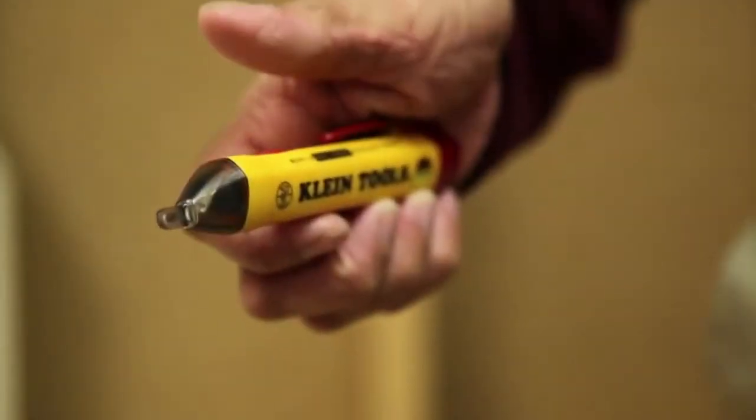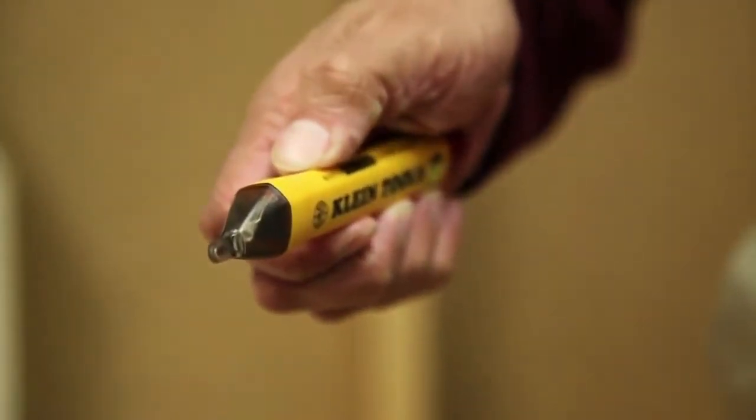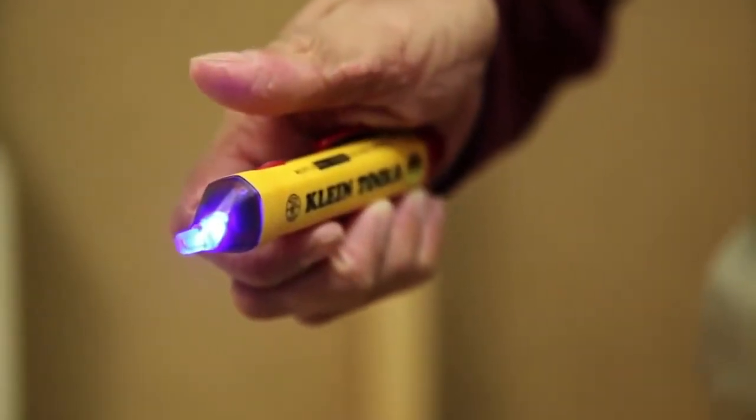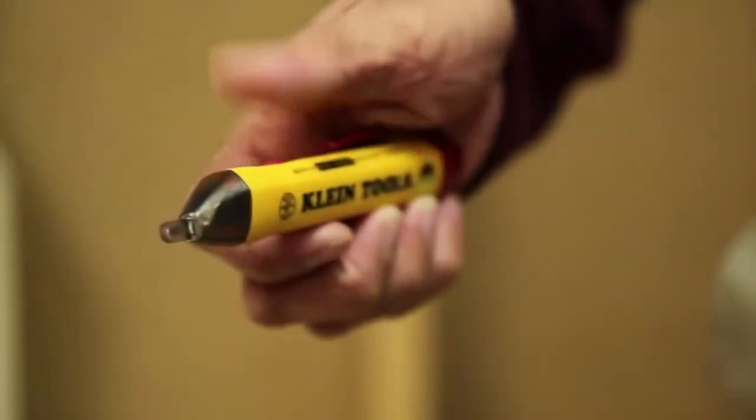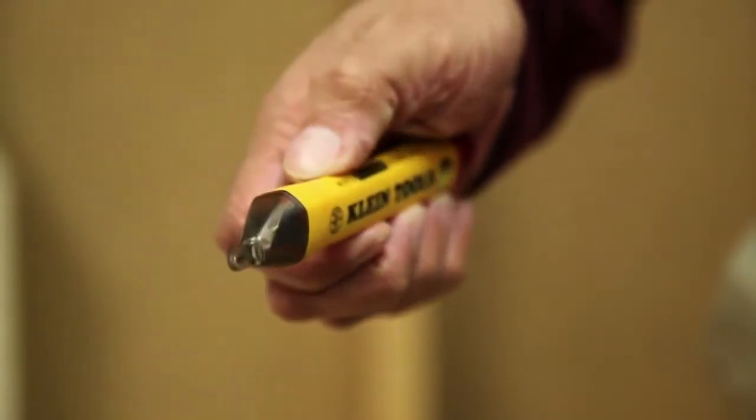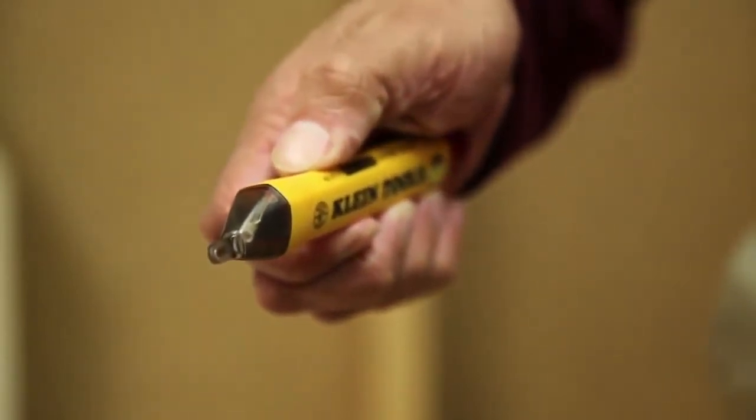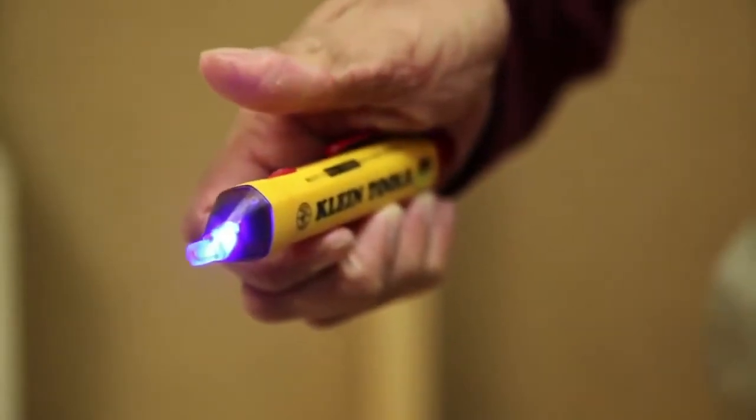The NCBT2 is also equipped with a silent mode function, which is useful in noise-sensitive environments like hospitals. To activate silent mode, make sure the tester is powered off, then press and hold the power button until the LED light illuminates. No audible indication should be heard.